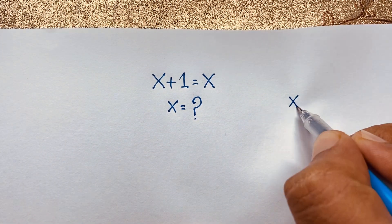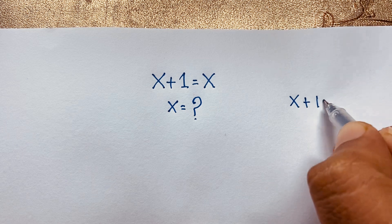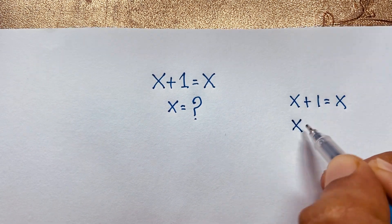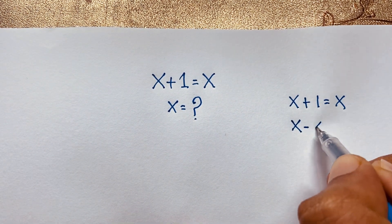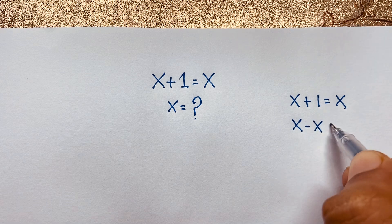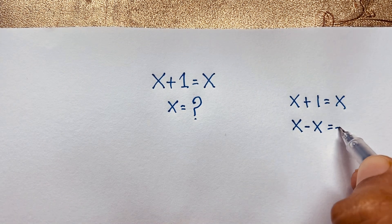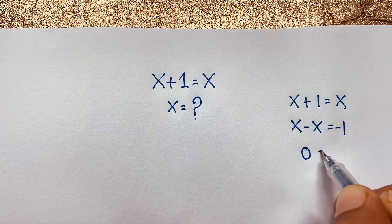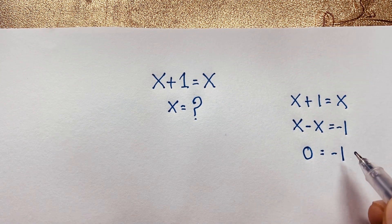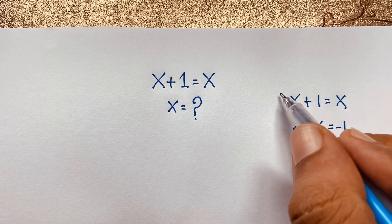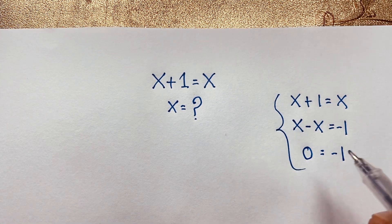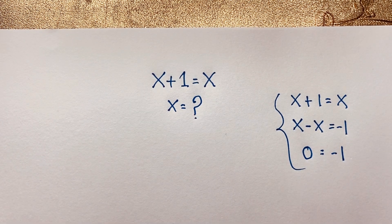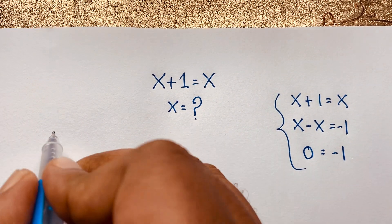So our question is x plus 1 is equal to x. If I move this x to this side it will be negative x, and if I move this 1 to this side it will be negative 1, then it will be 0 is equal to negative 1. Both sides are not equal, so we can't solve this question with this method. But how to solve this interesting math question? I'll solve this question with another method.